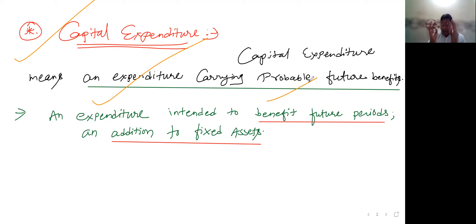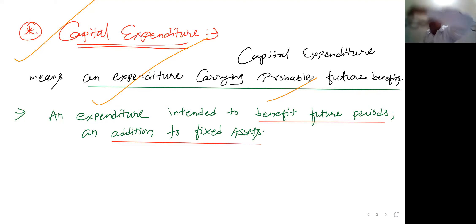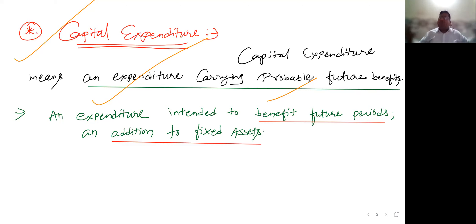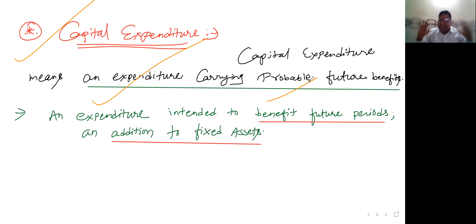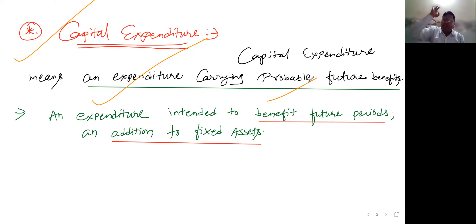So the word or sentence to remember: an expenditure carrying probable future benefits. That is what capital expenditure is — simple. Remember it.